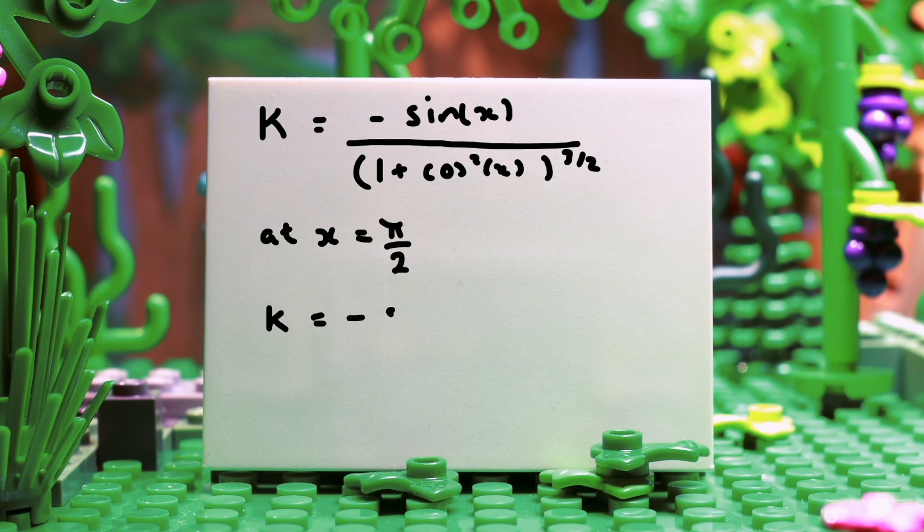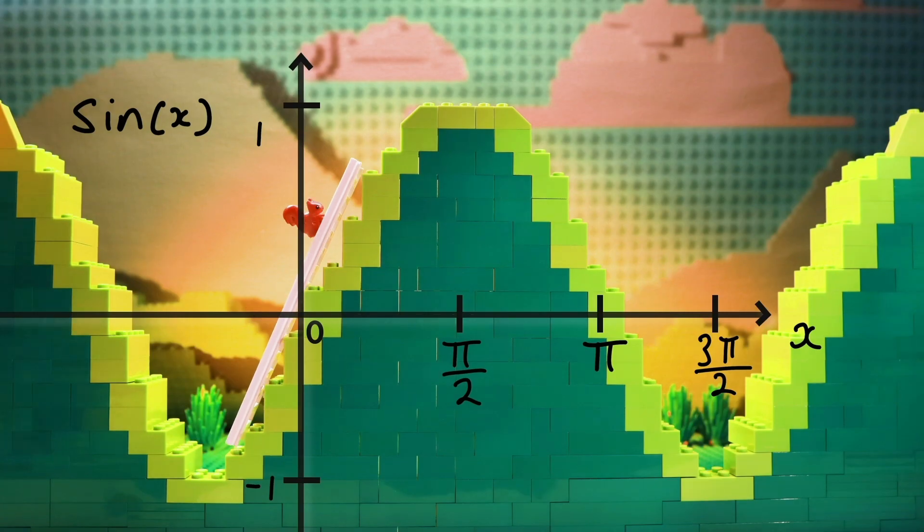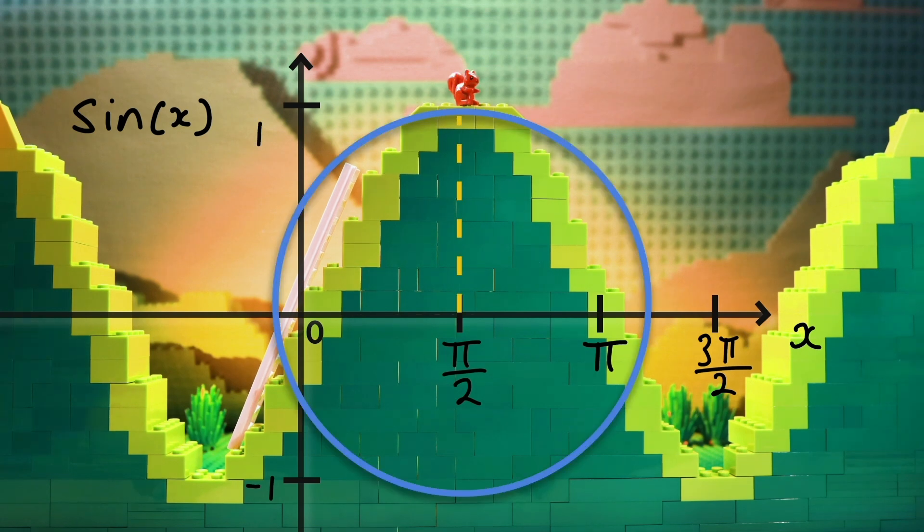If we worked out the curvature where x equals pi over 2, we find kappa equals negative 1. So the radius of curvature is the reciprocal of this, which is 1 divided by negative 1, which has a magnitude of 1, and the negative sign indicates the curve is bending down below the tangent, which we call concave down.